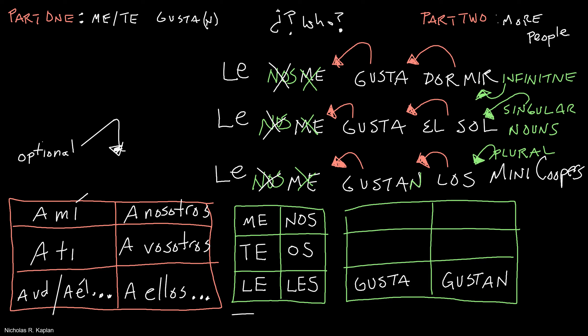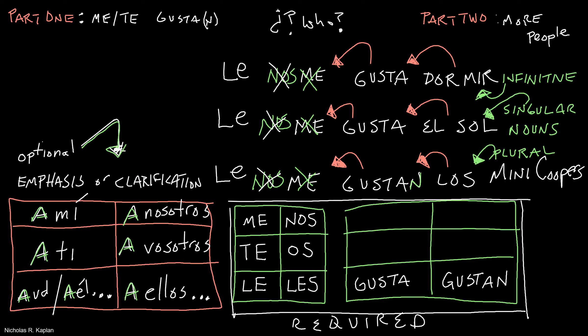So this part over here is optional. These two right here, required. See that a there? This is one of the things that trips people up sometimes. When we want to add this extra emphasis and clarification, when using the verb gustar, we also need to put that a.